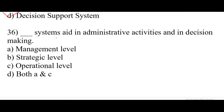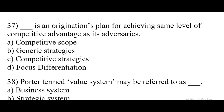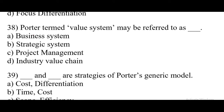Question number 35. The cost of the quality measurement system is the dash in the organization. Right answer: Option D: Decision Support System. Question number 36. Dash systems aid in administrative activities and in decision making. Right answer: Option A: Management level. Question number 37. Dash is an organization's plan for achieving same level of competitive advantage as its adversaries. Right answer: Option C: Competitive Strategies. Question number 38. Porter termed value system may be referred to as dash. Right answer: Option D: Industry Value Chain.